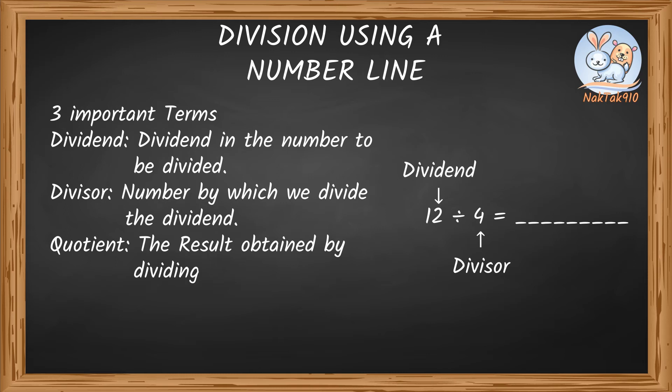Quotient is the result obtained by dividing these numbers. And that's blank, so we need to figure this out.